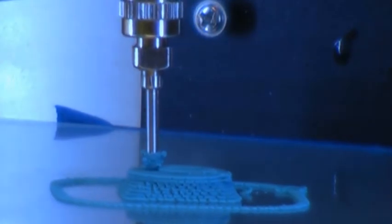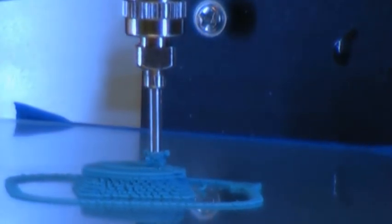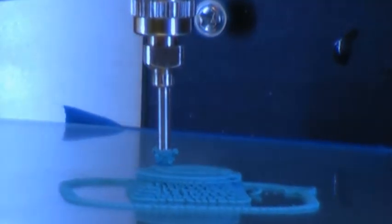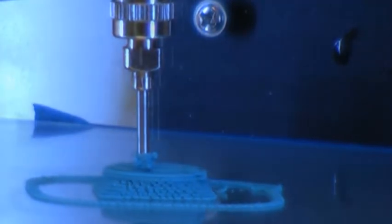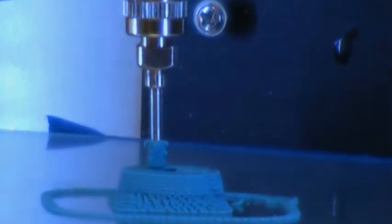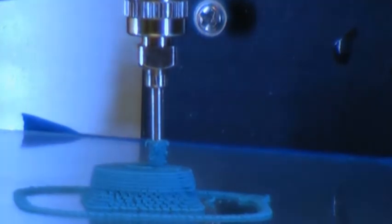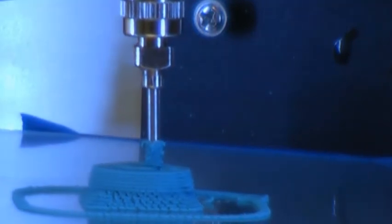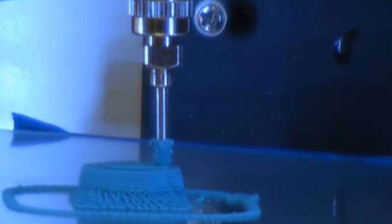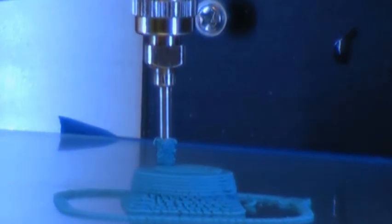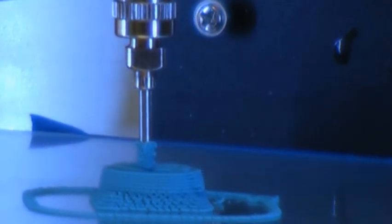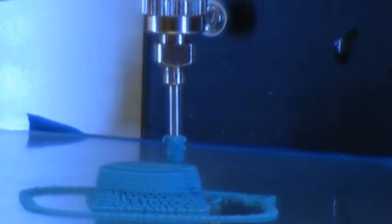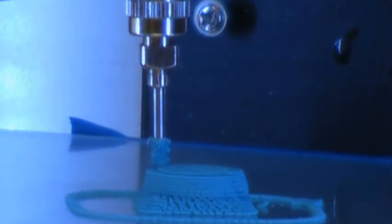A little pause you can hear between each perimeter is when it makes that non-printing move, it does an un-prime or retract. It moves to where the next perimeter starts and it does a prime or an advance. So that's the little pauses between perimeters.